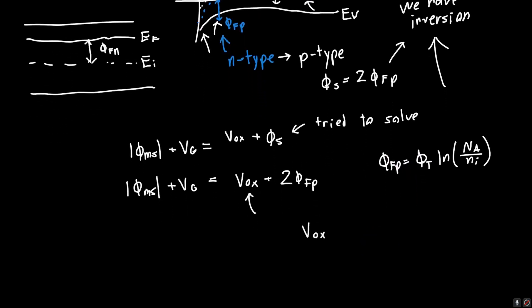So, we could rewrite Vox as the depletion region charge over the capacitance, the area per unit area capacitance of the oxide. And we said this was equal to 2 times epsilon_silicon times Q times NA times PHI_S. But in this case, this PHI_S, we know to be 2 times PHI_FP. So, we didn't have to do any work at all, we didn't have to solve any quadratic equation.